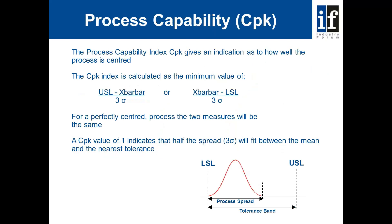Because CP does not tell us the location of the process spread, we tend to use CPK. The process capability index CPK gives us an indication of how well the process is centered. CPK is calculated as the minimum value of: (upper specification minus X bar bar) divided by 3 sigma, or (X bar bar minus the lower specification) divided by 3 sigma. For a perfectly centered process, the two measures will be the same. A CPK of one indicates that half the spread — three standard deviations — will fit between the mean and the nearest tolerance. It shows the relationship between the spread and the tolerance, and also the location of the curve relative to the specification limits.